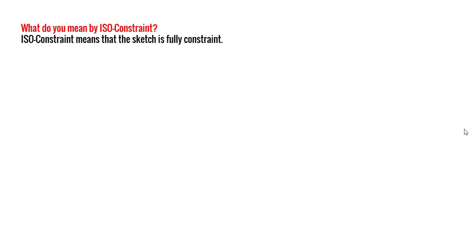The next question can be: what do you mean by ISO constraint? We had seen this term in sketches whenever we were doing sketch analysis. ISO constraint simply means that your sketch is fully constrained. The CATIA software shows fully constrained as a term called ISO constraint.